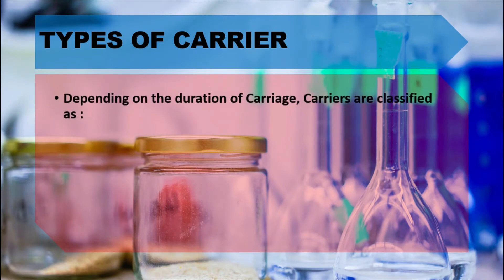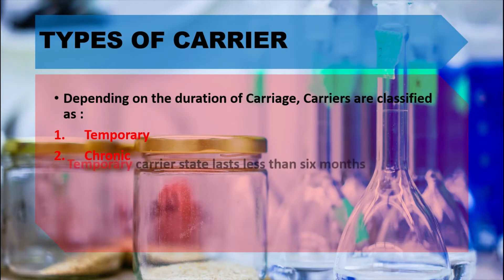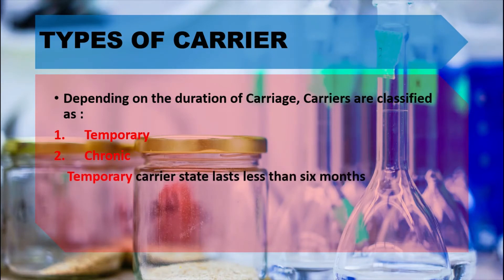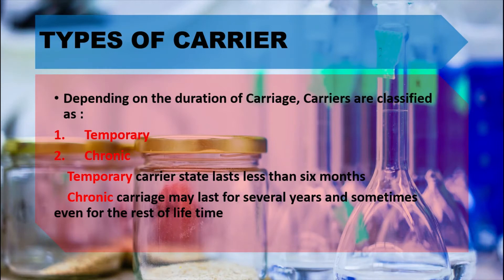Carriers may also be classified depending on the duration of the carrier state. By this method, there is the temporary carrier and the chronic carrier. The temporary carrier state lasts less than six months. The chronic carrier state may last for several years and sometimes even for the rest of a lifetime — this is seen in cases like hepatitis B virus infection.